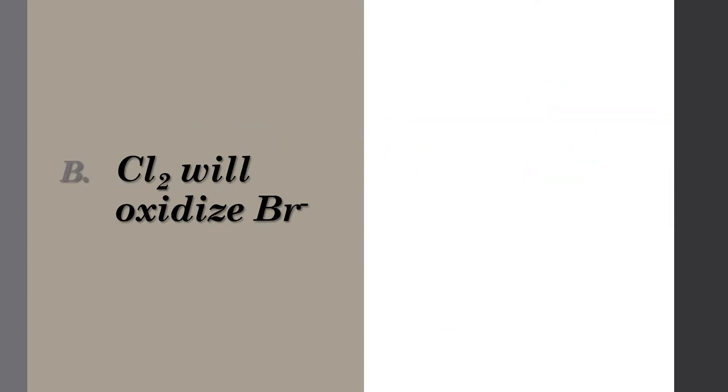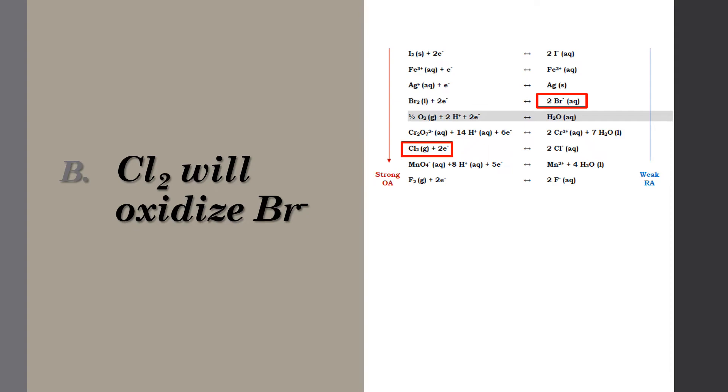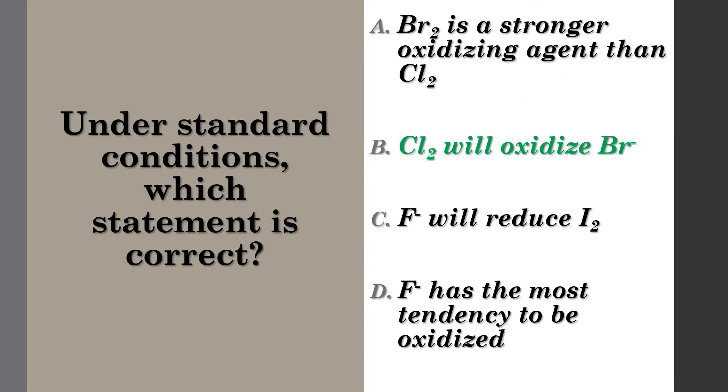Finally, option B tells us that chlorine will oxidize bromide. Once again, we look at where the species are on the table. Since both of them are considered stronger agents, this reaction will actually occur. So B is the correct answer.